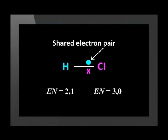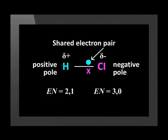A polar bond is a bond in which there is a separation of charge between one end and the other — in other words, in which one end is slightly positive and the other slightly negative. The hydrogen chloride molecule shown here is an example of a molecule with a polar bond. The higher electronegativity of chlorine compared to that of hydrogen means that the shared electron pair is found closer to the chlorine atom than the hydrogen atom. The result is that the chlorine side of the molecule is slightly negative and the hydrogen side is slightly positive.